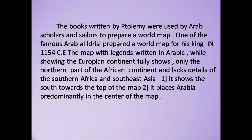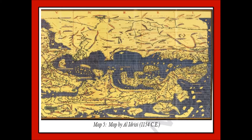The books written by Ptolemy were used by Arab scholars and sailors to prepare maps. One famous Arab mapmaker, Al-Idrisi, prepared a world map for his king in 1154 CE. The map, with legends written in Arabic, shows the Eurasian continent but only the northern part of the African continent, lacking details of southern Africa and Southeast Asia. Importantly, it shows the south towards the top of the map, and places Arabia predominantly in the center.